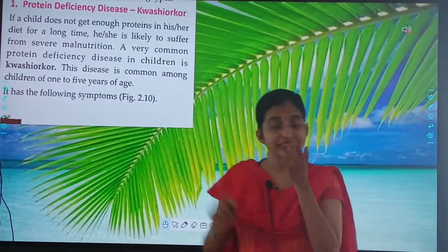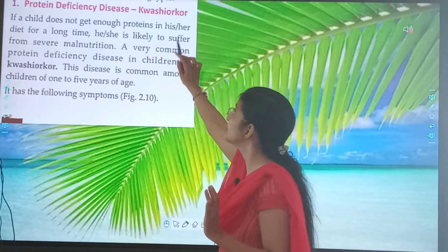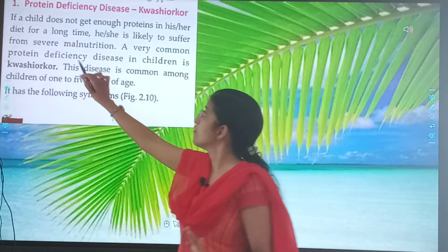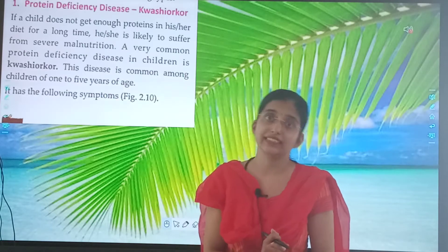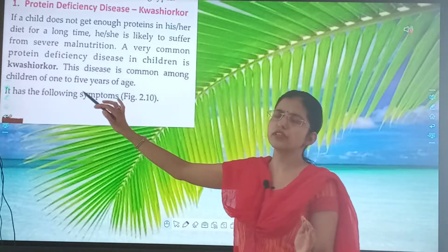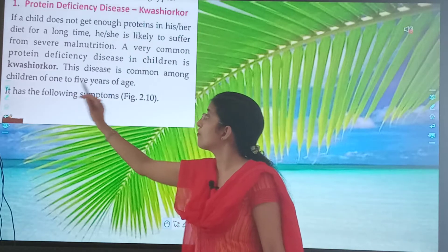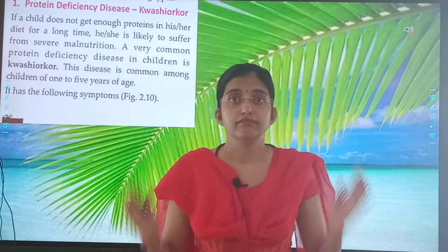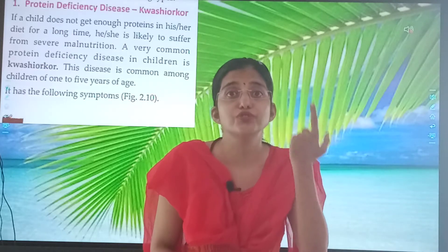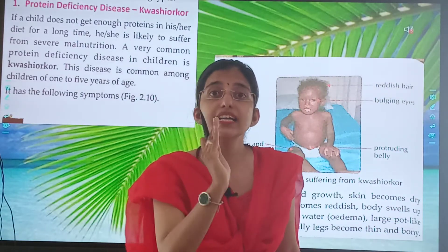That is Kwashiorkor. If a child does not get enough proteins in his or her diet for a long time, he or she is likely to suffer from severe malnutrition. A very common protein deficiency disease is Kwashiorkor. This disease is common among children of 1 to 5 years of age, and it is caused due to lack of protein.